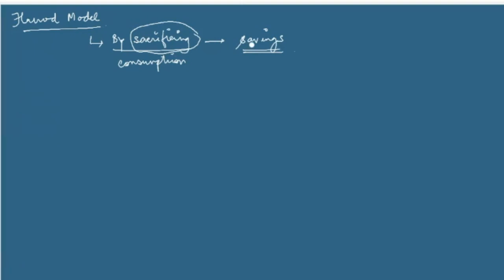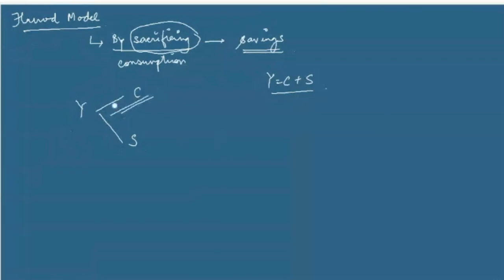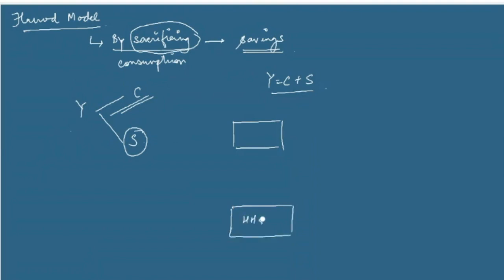The very basic idea of Harrod is that it is only by sacrificing consumption — or in other words by saving — that we can attain economic growth. Suppose you are earning a particular level of income as an economy. You have two outlets: income can go into consumption or into savings. You know this equation: Y = C + S. Harrod's fundamental idea is that if income only goes into consumption, the economy can never grow. It is only through saving that growth is possible. How does that channel actually operate? Consider a simple two-sector model with households and firms.